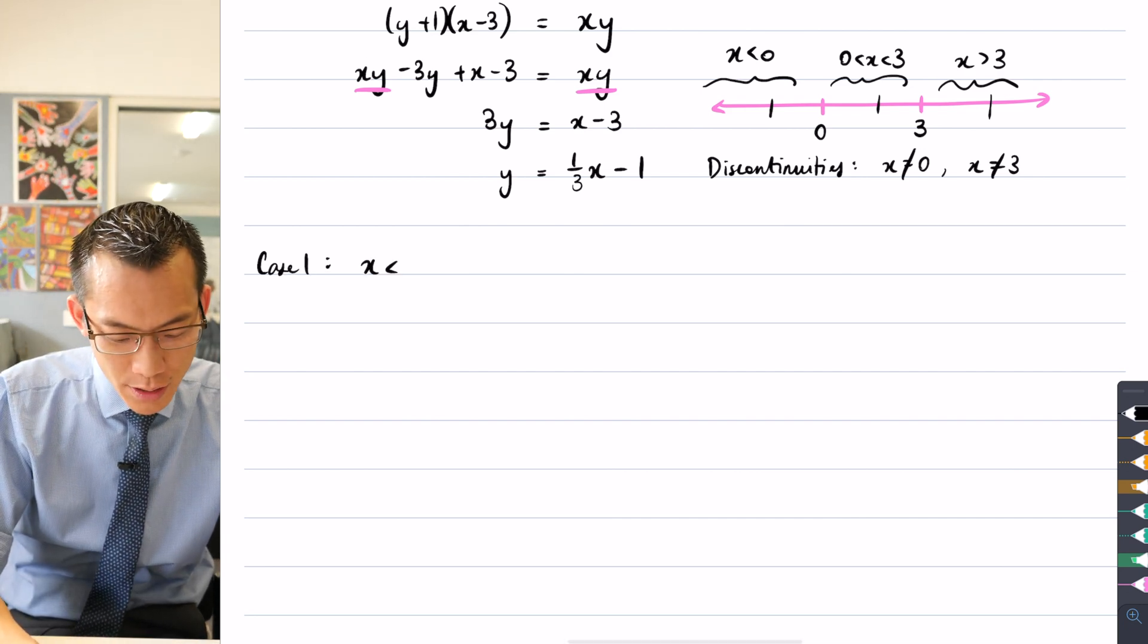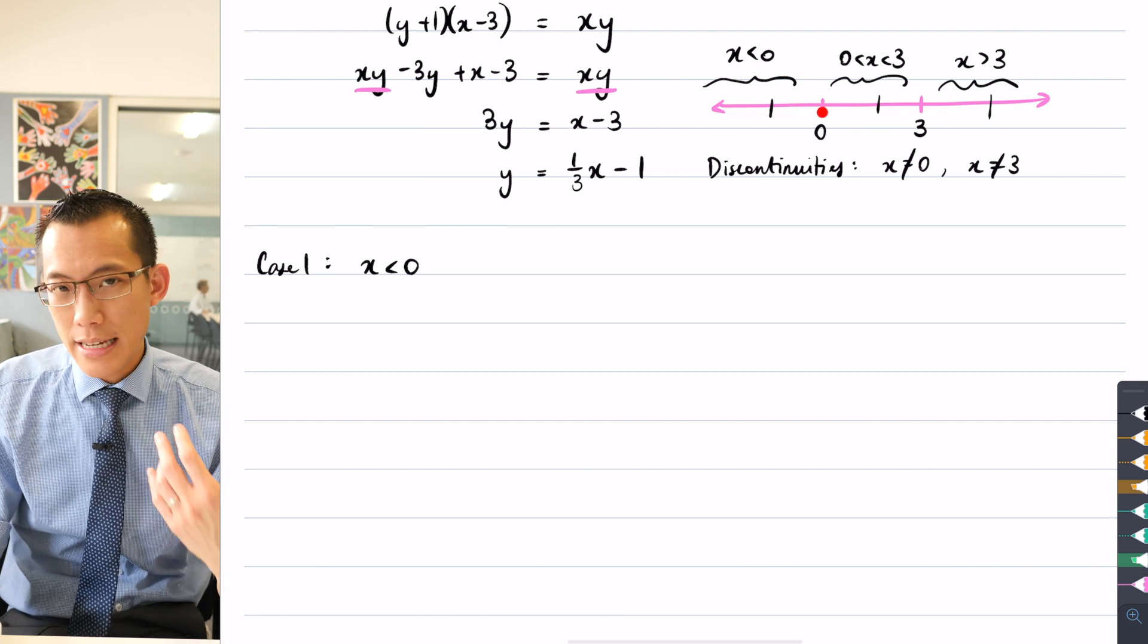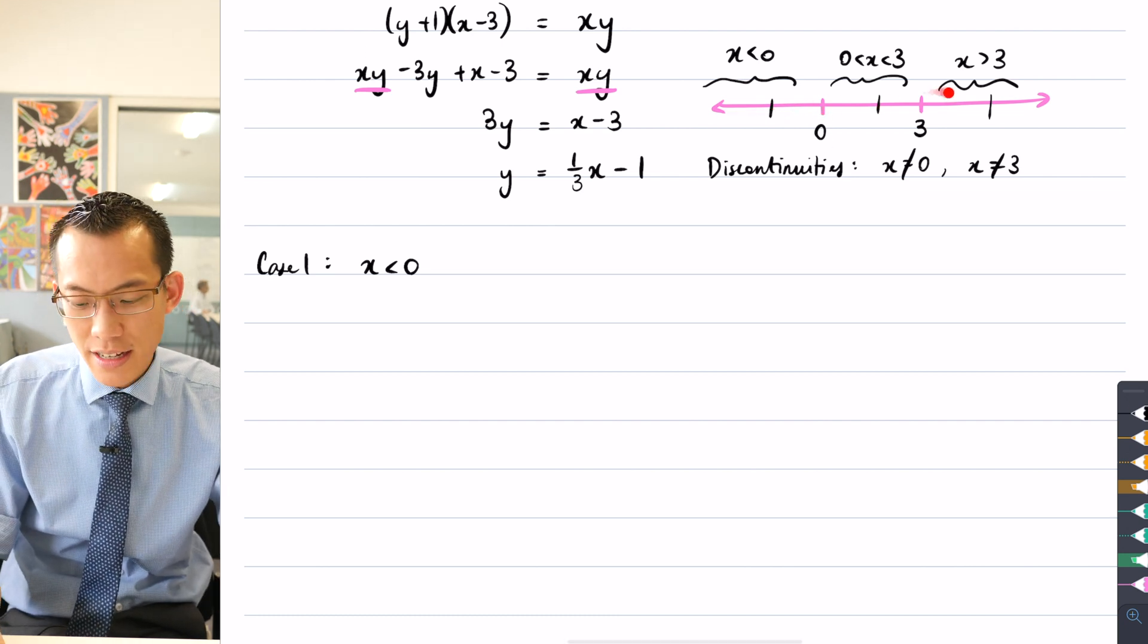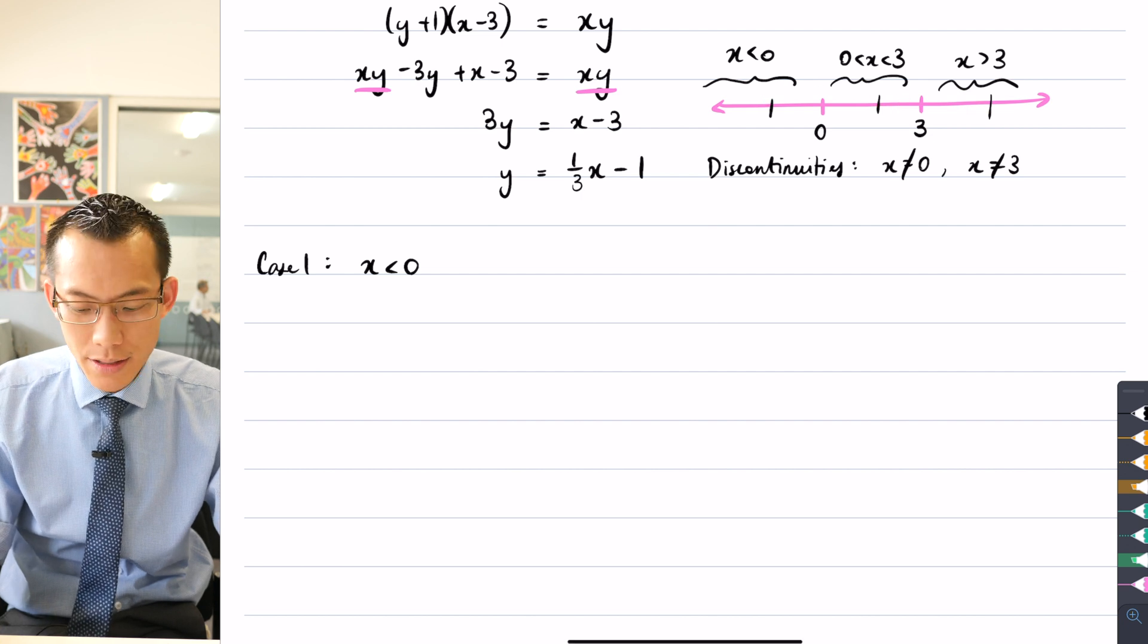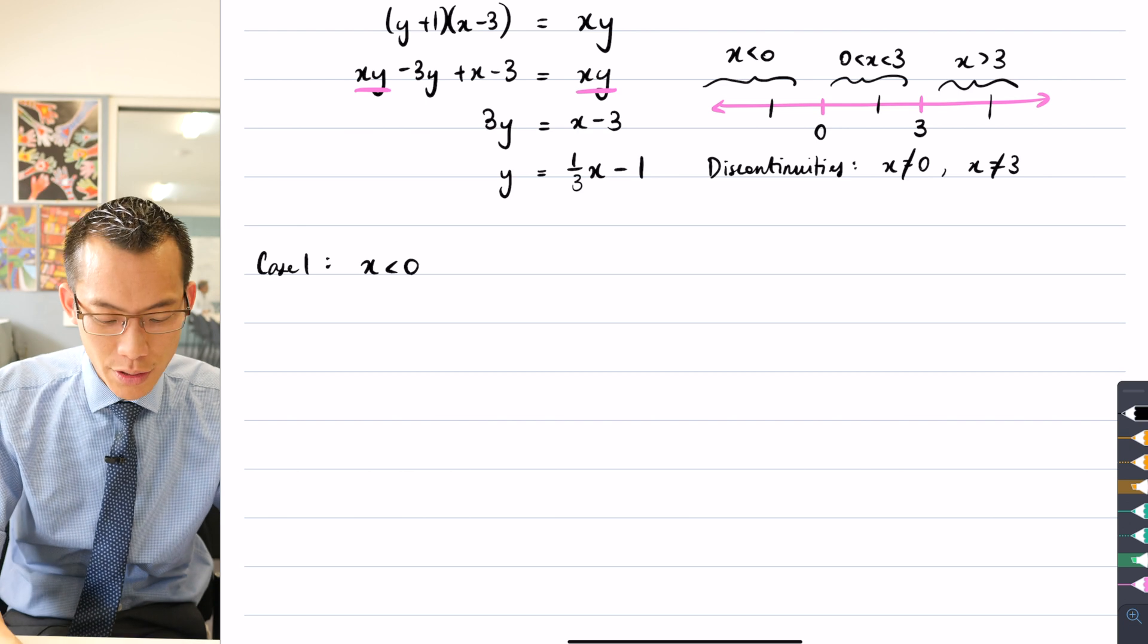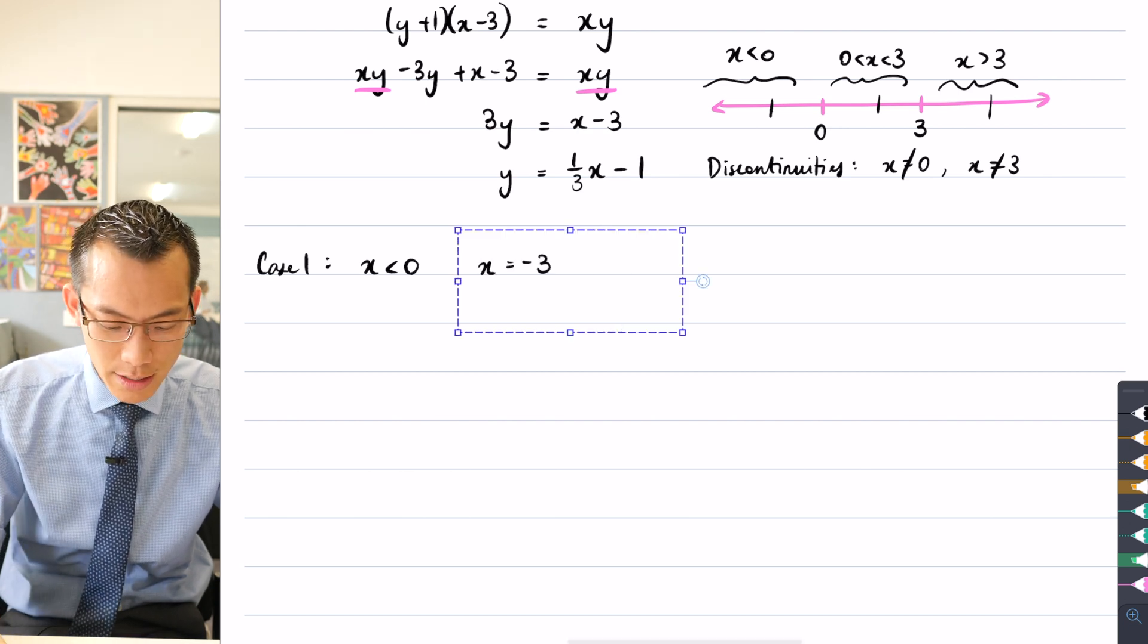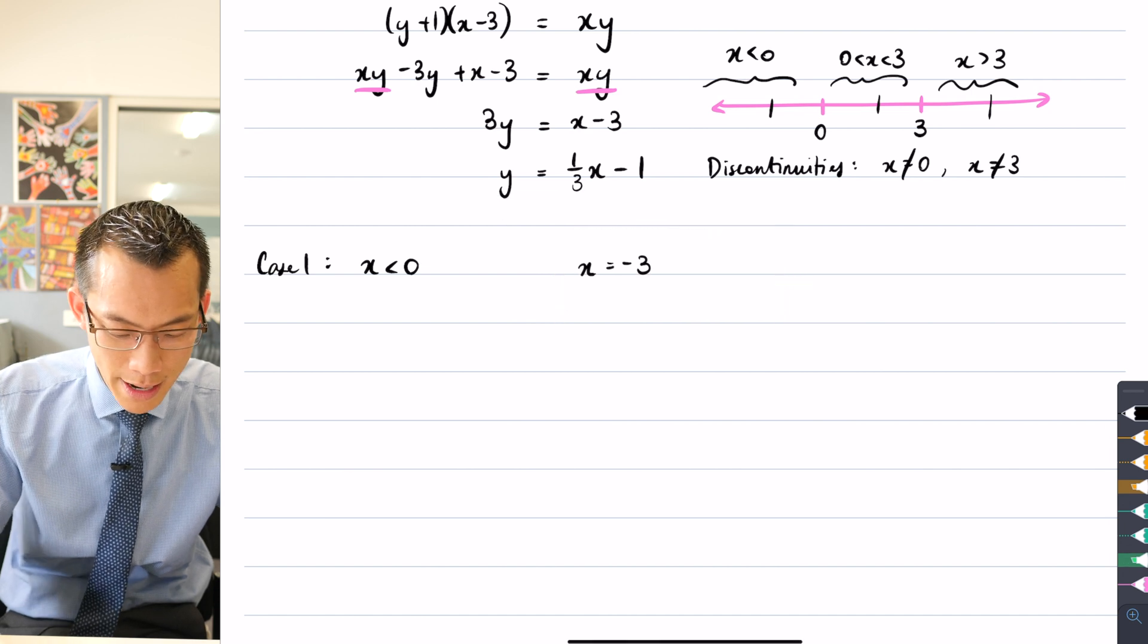Now remember, I've got this domain here, x is less than zero for this domain over here, but it's in our interest to select a particular value within those domains that's easy for me to substitute. So in this domain, I'm going to choose x equals negative three. I'll just say consider that because it's in this domain.